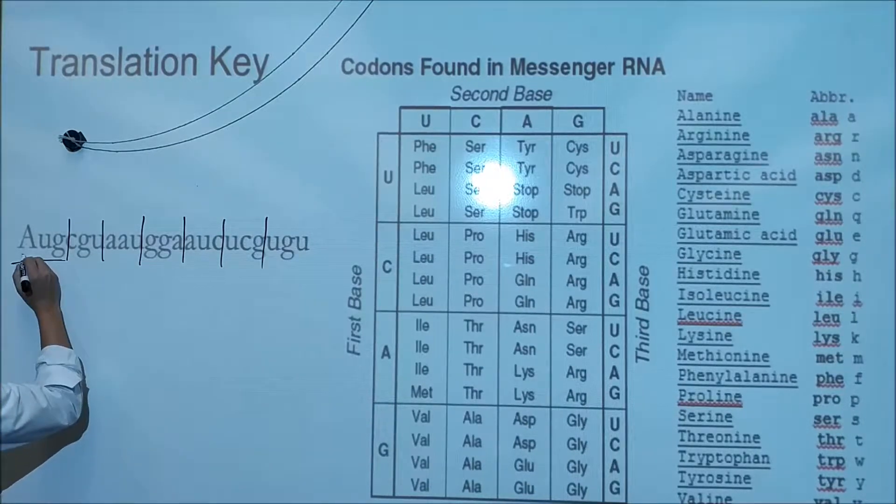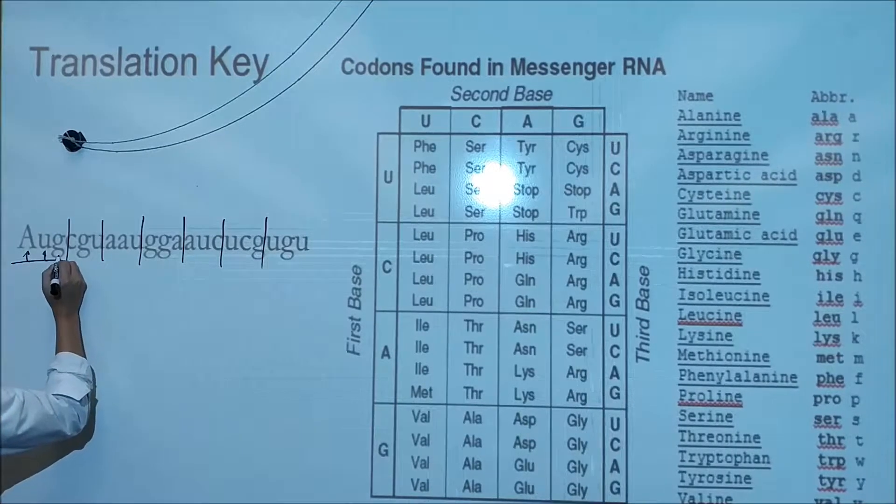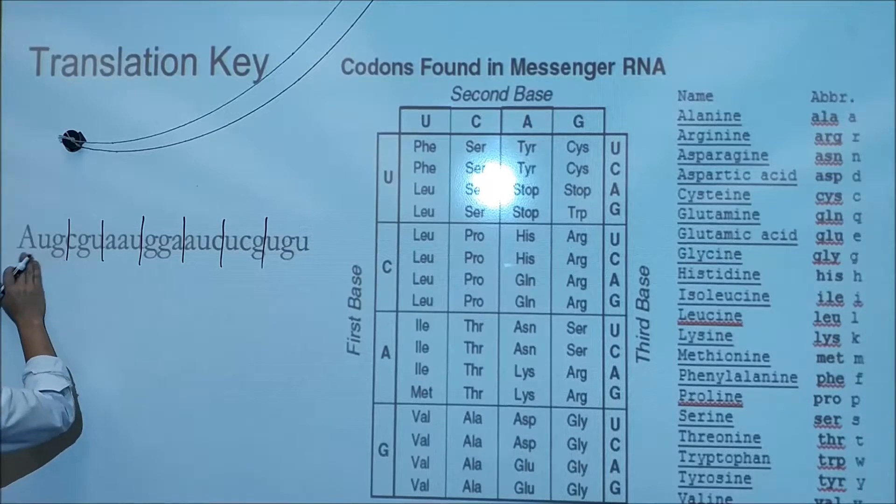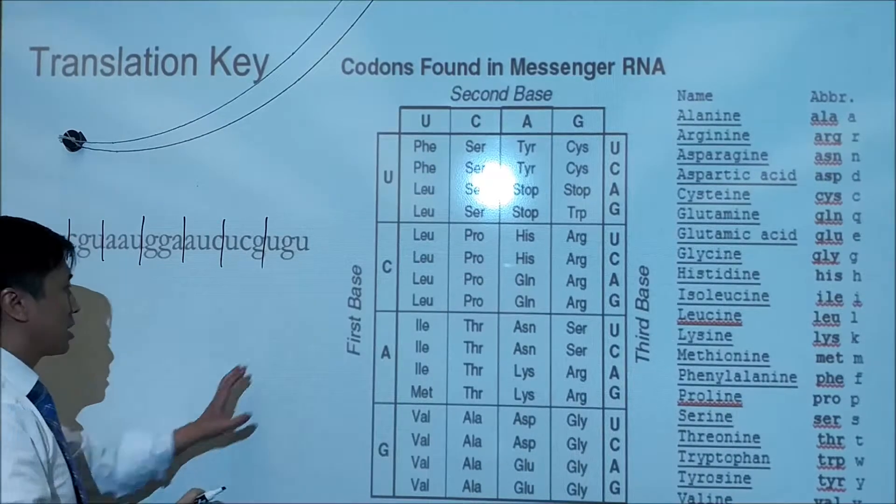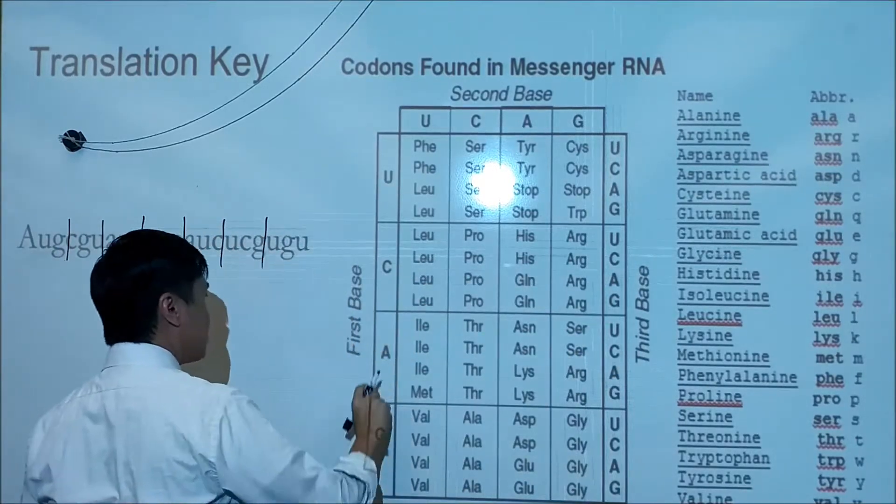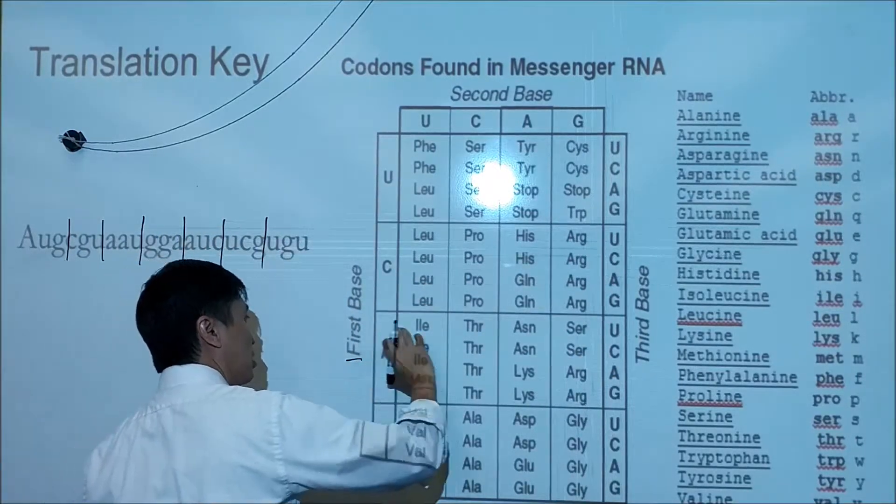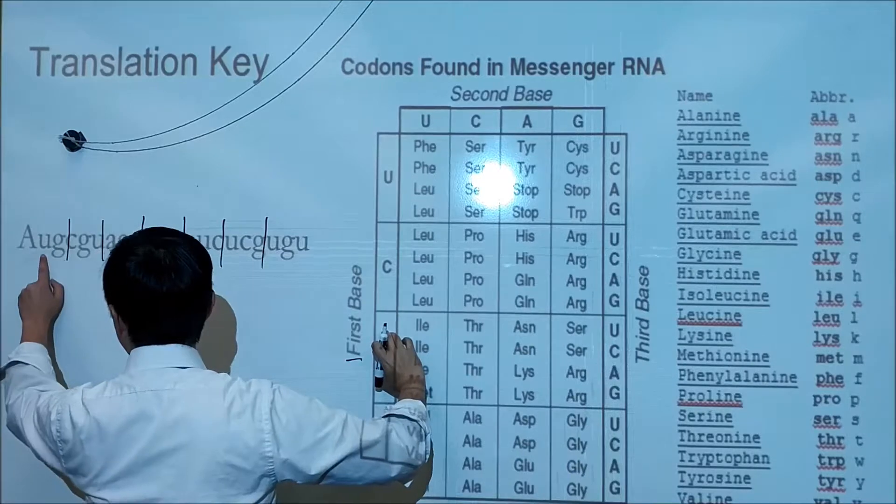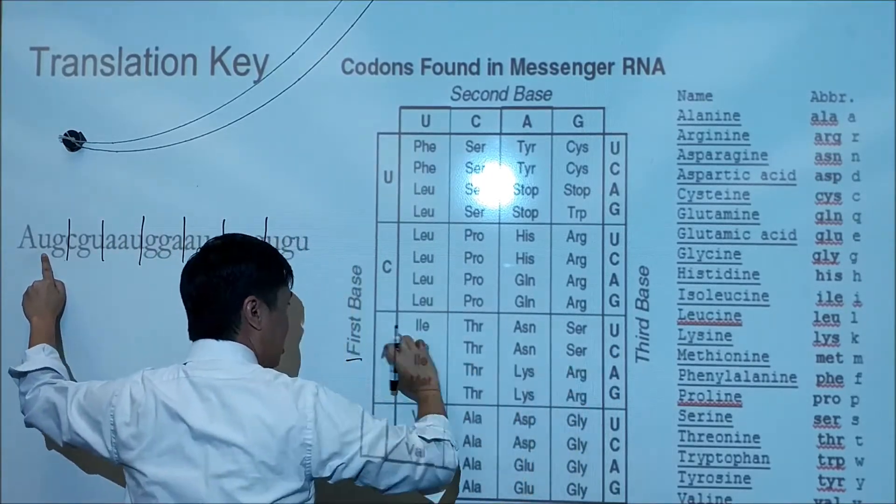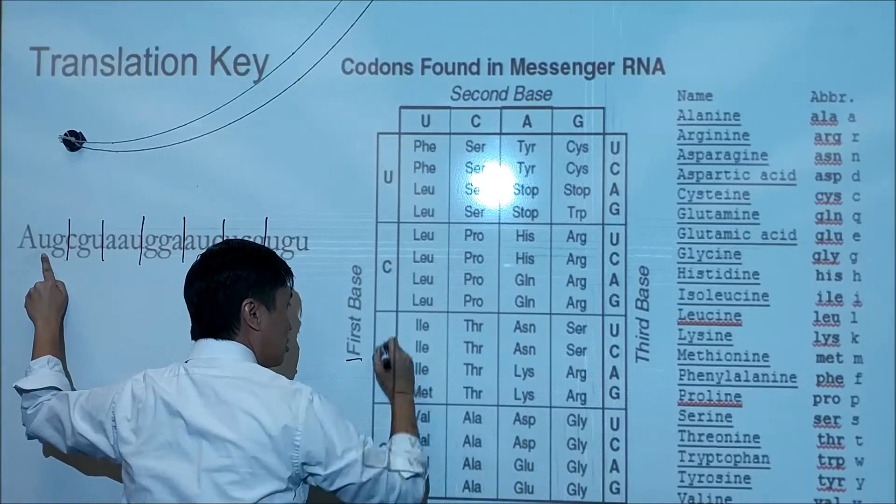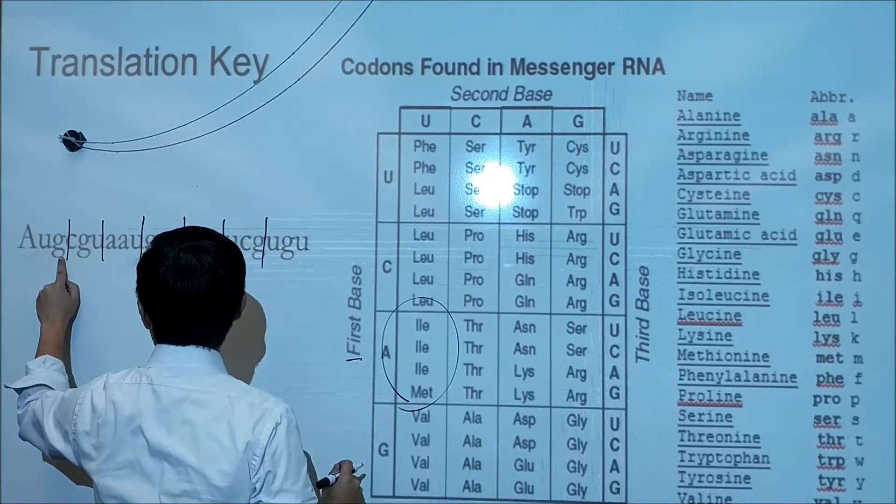Here's how we figure out what this codes for by looking at base one, two, and three. Base one is A, base two is U, base three is G. If you look at this chart I gave you, the first base A means it's in this row. The second base U means it's in this column, so it's in this box. The last base is G, so it's this amino acid.